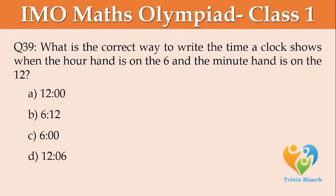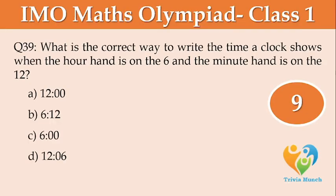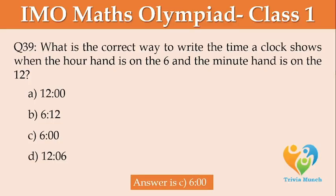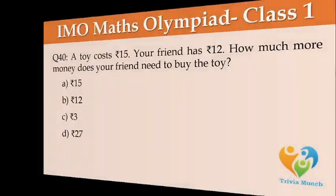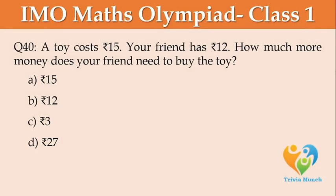What is the correct way to write the time when the hour hand is on the 6 and the minute hand is on the 12? Option A: 12 o'clock, Option B: 6 o'clock, Option C: 6, Option D: 12 o'clock. A toy costs Rs. 15. Your friend has Rs. 12. How much more money does your friend need to buy the toy? Option A: Rs. 15, Option B: Rs. 12, Option C: Rs. 3, Option D: Rs. 27.